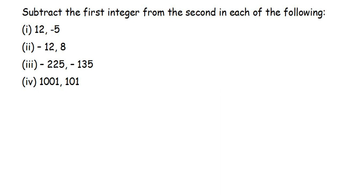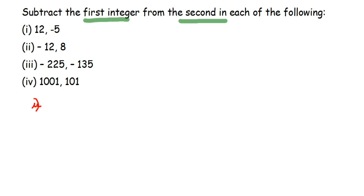Here is a question on integers: subtract the first integer from the second in each of the following. Read this carefully — subtract the first integer from the second, which means you have to remove the first integer from the second. So for the first question, 12 and -5: 12 is the first integer, so we remove 12 from -5, giving us -5 minus 12.